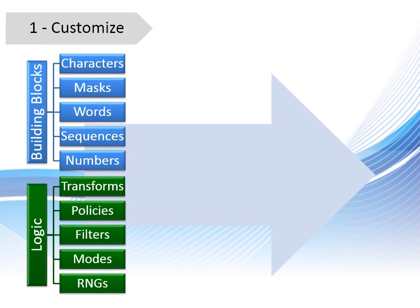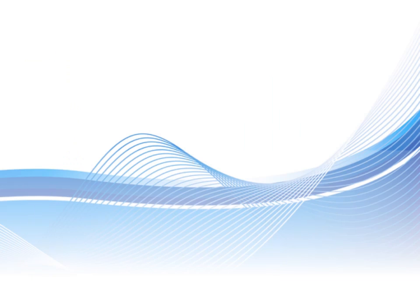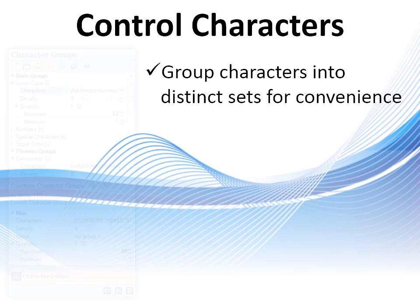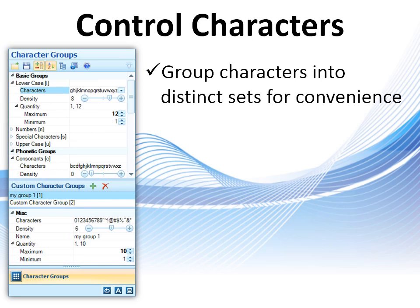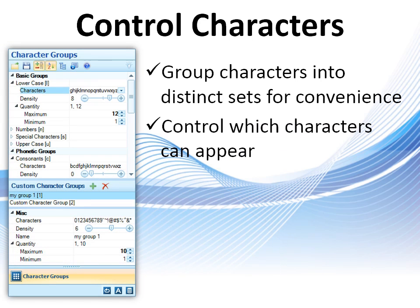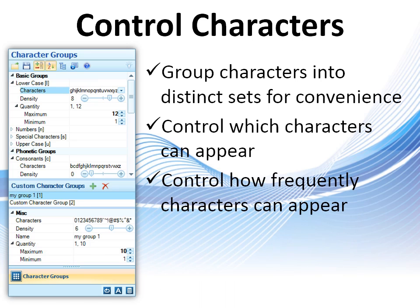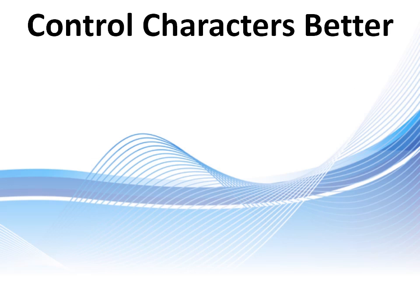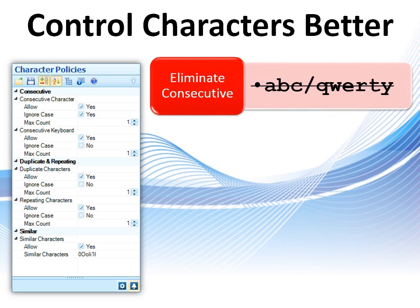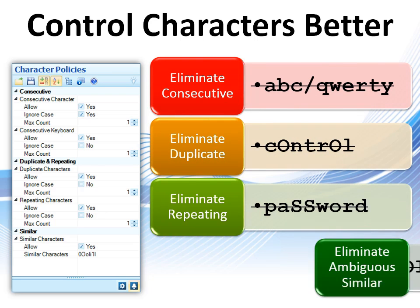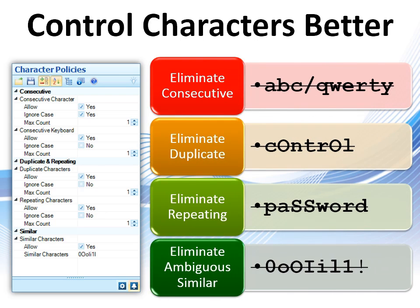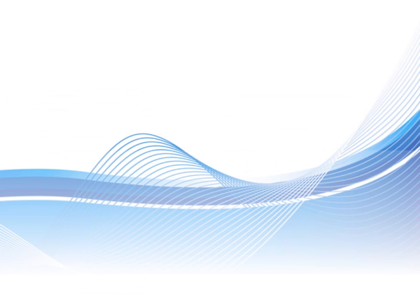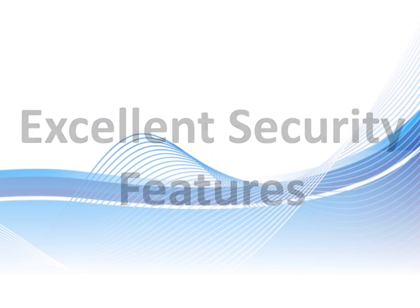Let's see some of the features involved in the first step. By grouping characters into distinct sets called character groups, you can control not only which characters can appear in your passwords, but also how frequently, and you can use non-ASCII Unicode characters. You can achieve even more control by setting the policy for consecutive, duplicate, repeating, and similar characters, the elimination of which may be required by your security policy. Speaking of which, the product has excellent security features.